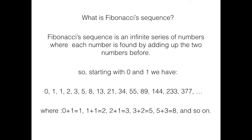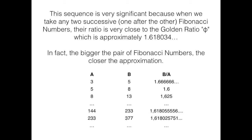Fibonacci's sequence is an infinite series of numbers, where each number is found by adding up the two numbers before. This sequence is very significant, because when we take any two successive Fibonacci numbers, their ratio is very close to the golden ratio, which is approximately 1.618034. In fact, the bigger the pair of Fibonacci numbers, the closer the approximation.